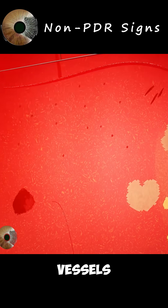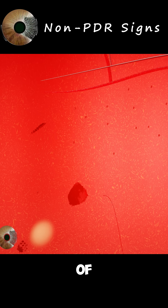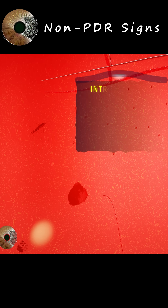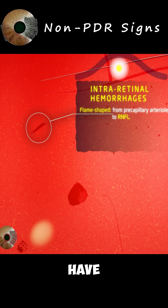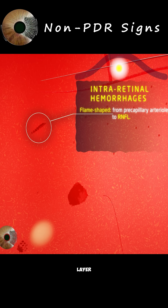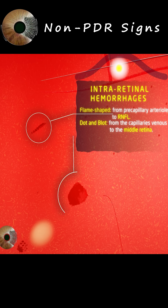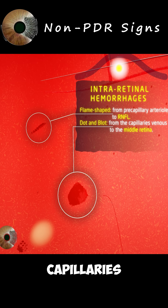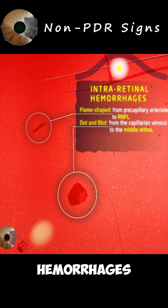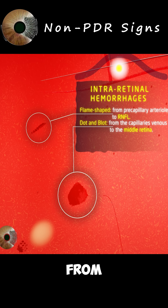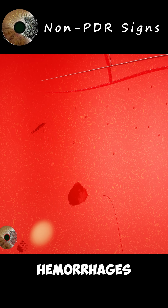Thrombus in small vessels and dysfunction of endothelial cells of precapillary arterioles lead to retinal hemorrhages, which are either superficial in the nerve fiber layer with a flame shape due to the architecture and organization of retinal nerve fibers, or deep hemorrhages from the venous end of capillaries to the compact middle layers of the retina, resulting in dot and blot configuration. Dot hemorrhages are small and can be indistinguishable clinically from microaneurysms. Blot hemorrhages are larger.